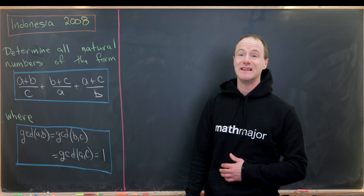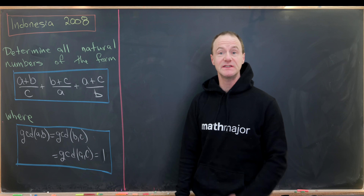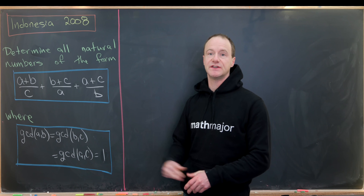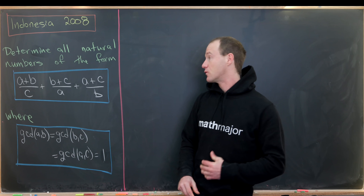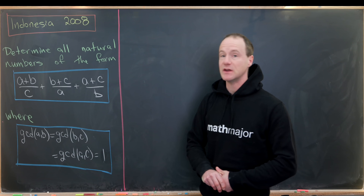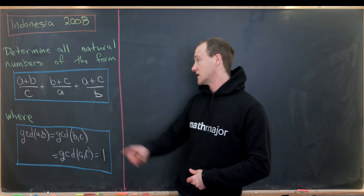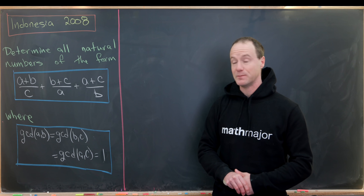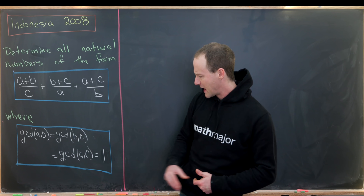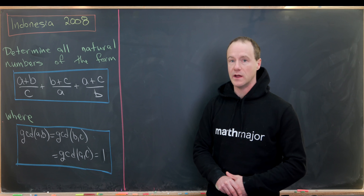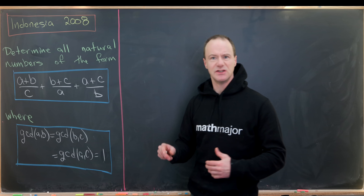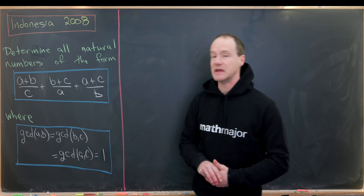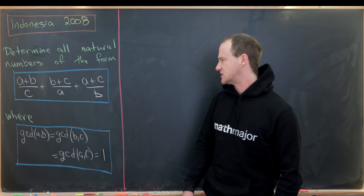Here we have a nice problem from the Indonesian Mathematical Olympiad, from the year 2008. Our goal is to determine all natural numbers that can be written in the form (A+B)/C + (B+C)/A + (A+C)/B, where all pairwise GCDs are one. In other words, A and C do not share any prime factors, same with A and B, and B and C.